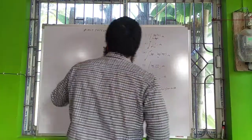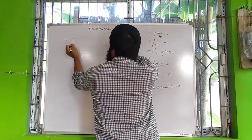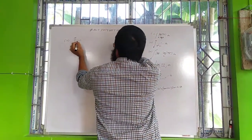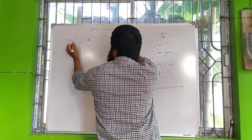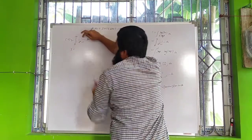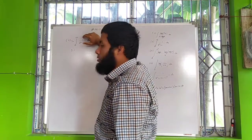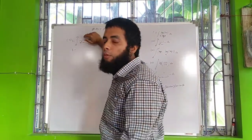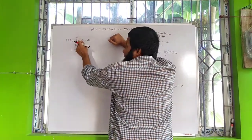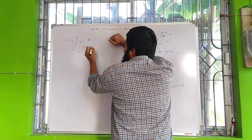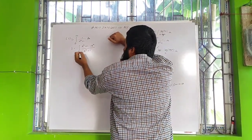Now let us continue with the second question, which is the integration from 0 to infinity of 1/(e^x + 1) dx. Since the numerator is only 1 and the denominator is e^x + 1, this poses a problem. What I do here is add and subtract e^x, giving (e^x + 1 − e^x) / (e^x + 1), which simplifies our problem.